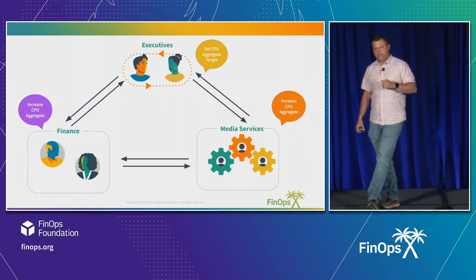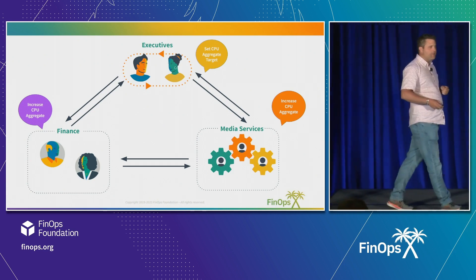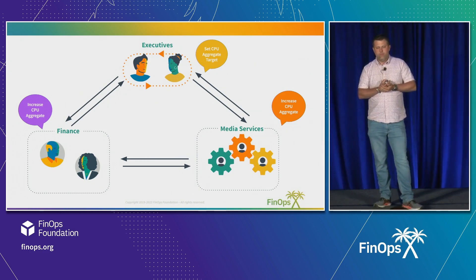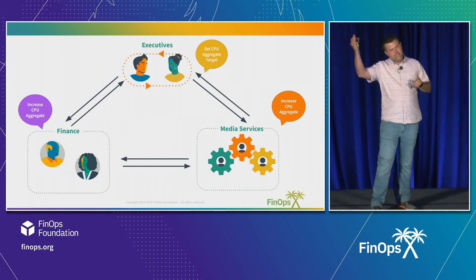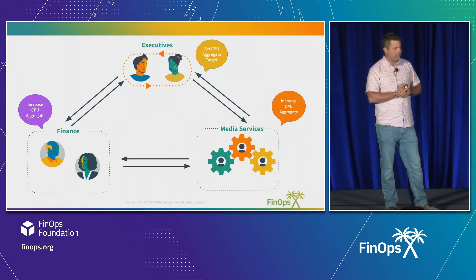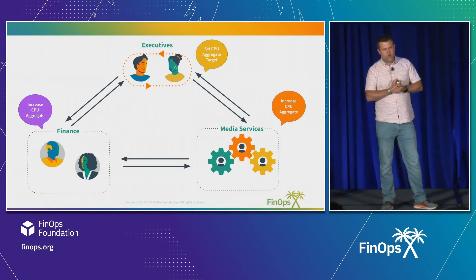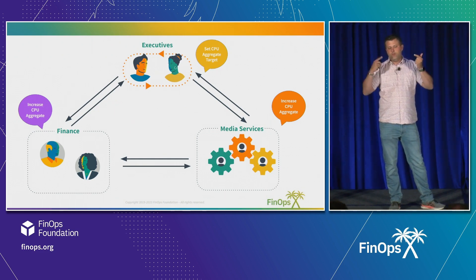From a finance perspective — I'm an engineer in finance, don't ask — we can say things like, increase CPU aggregate. We can go to the engineer, and the engineer says, yes, this does seem fair. Then we can go to the executive and ask them the same bit of information. The engineers in turn are getting messages not only from finance to increase CPU aggregate, but they're also hearing from their executives to increase the CPU aggregate as well.